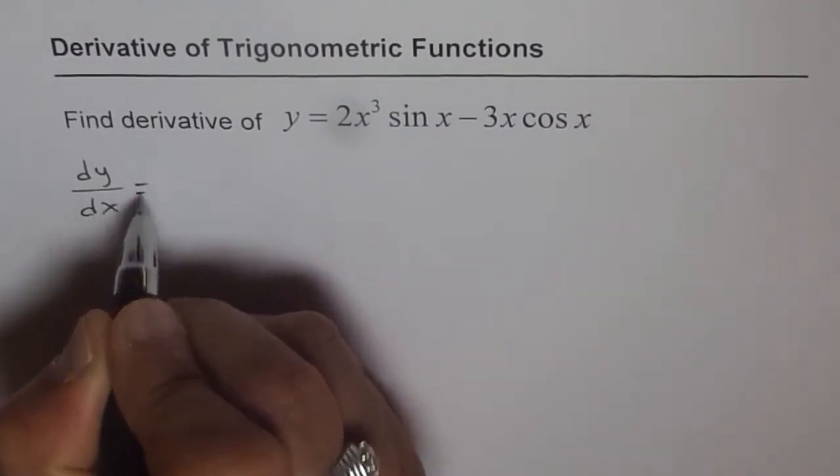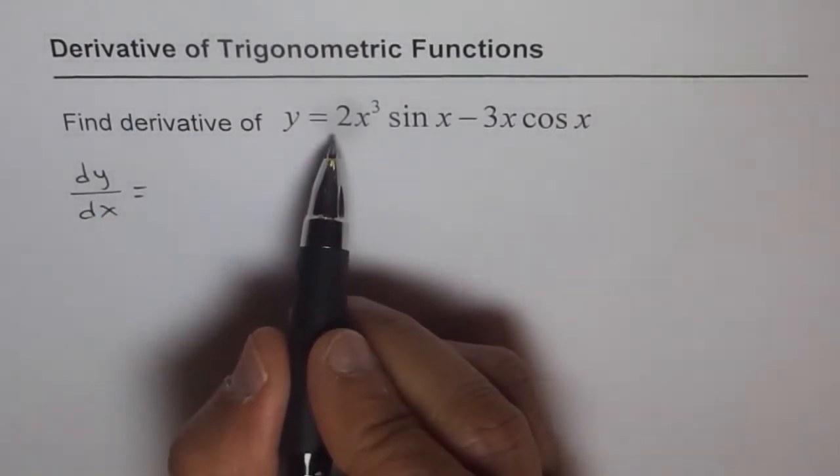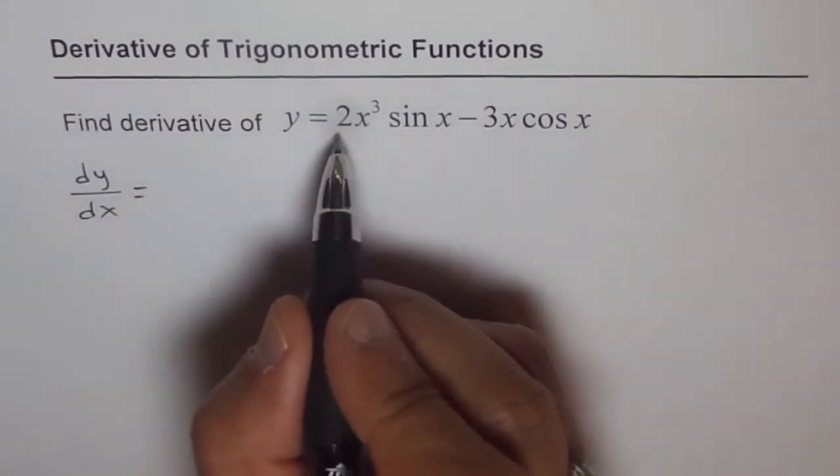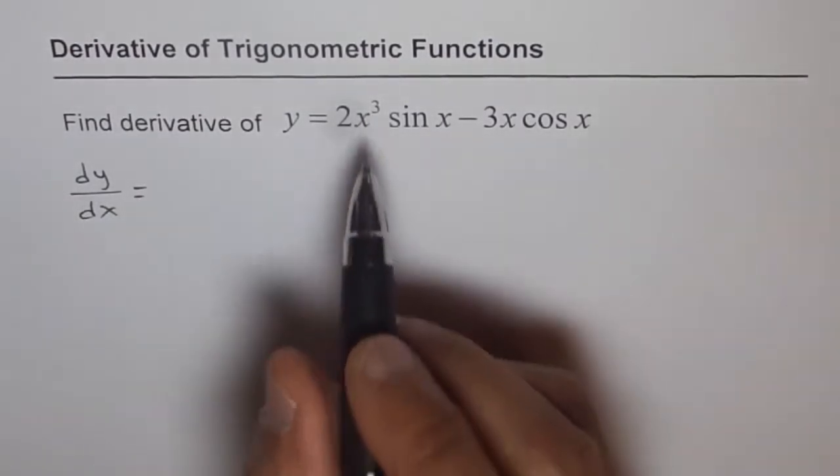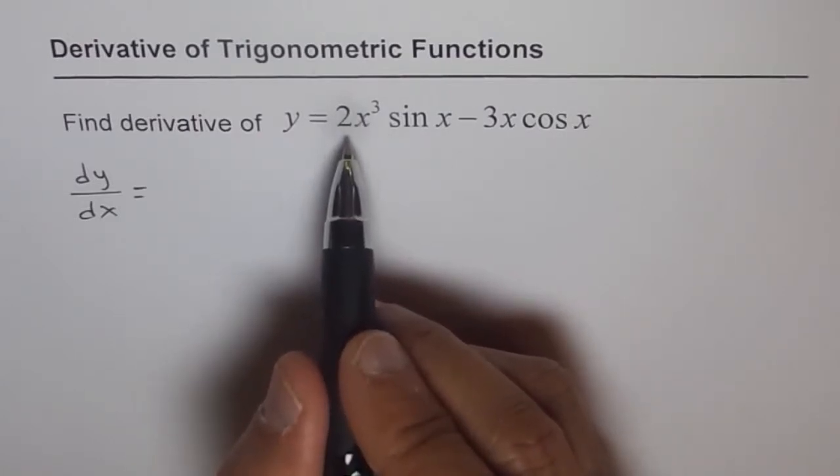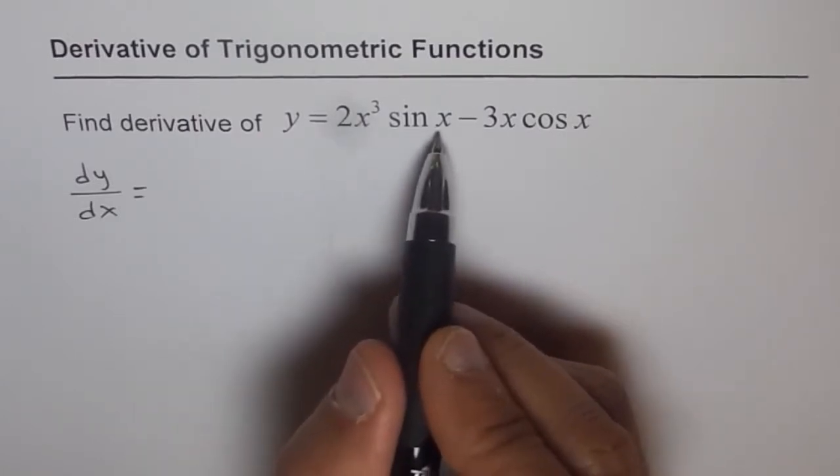dy dx will be, so derivative of the first function, we will apply the product rule. We will consider 2x cubed as the first factor and the other factor as sin x.